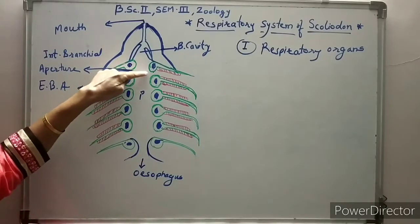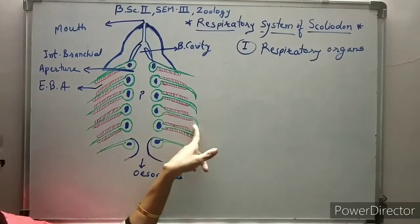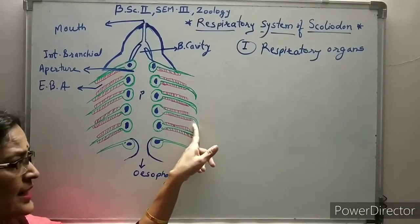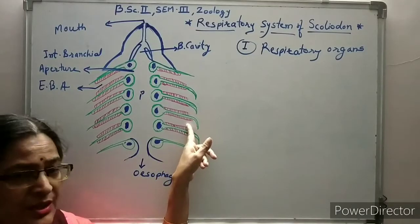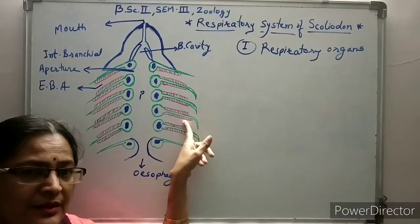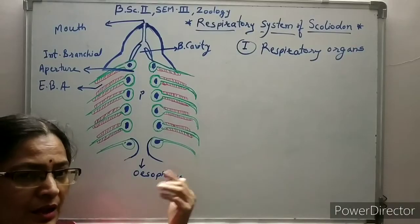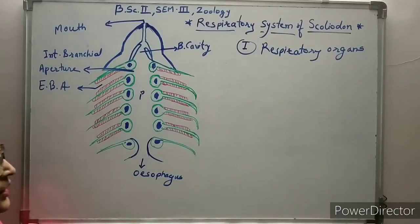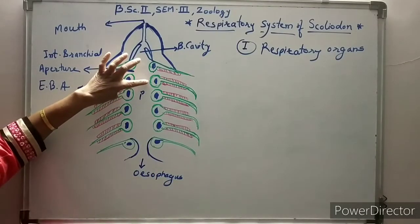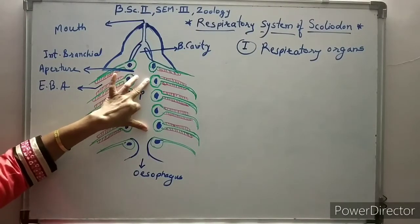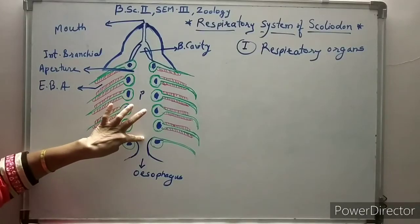On the inner side of the pharynx, the opening of the gill pouches is the internal branchial aperture. On the exterior side, this is the external branchial aperture, also known as external gill slits. There are five external gill slits — the outer openings of gill pouches. Now, observe: these four are the complete gills, and these two are the incomplete gills.